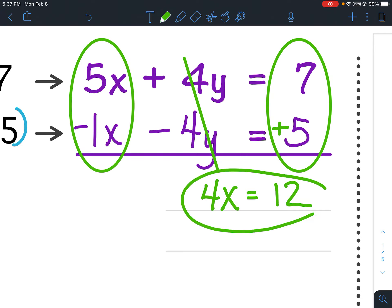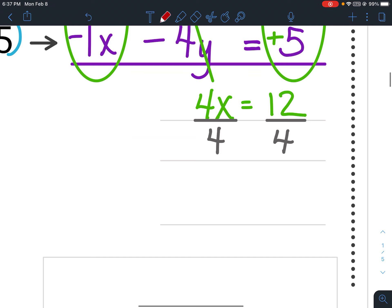Once I've done that, I get a one-step equation. To solve that, I simply divide both sides by 4, giving me x equals 3.